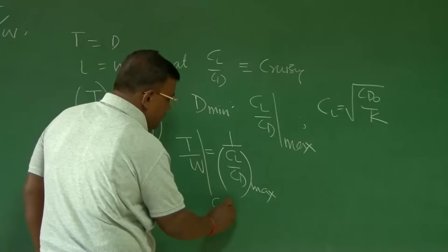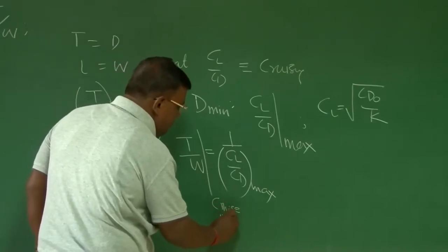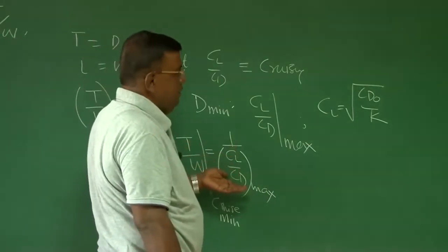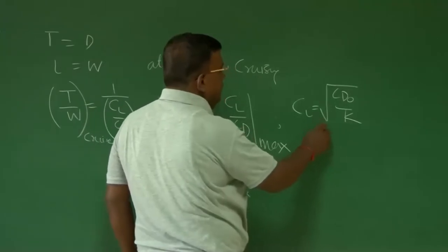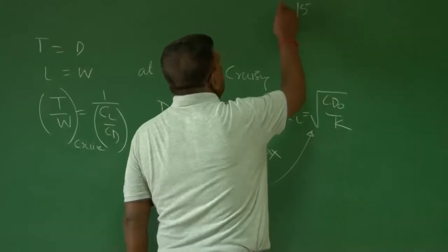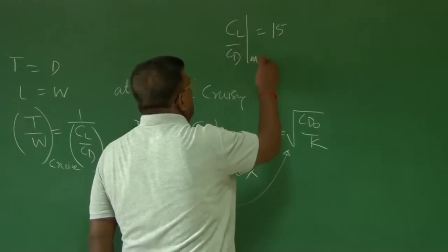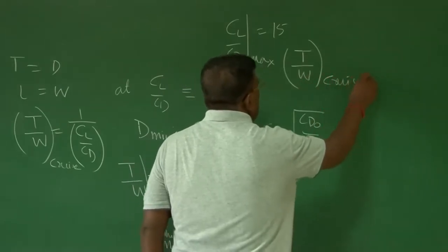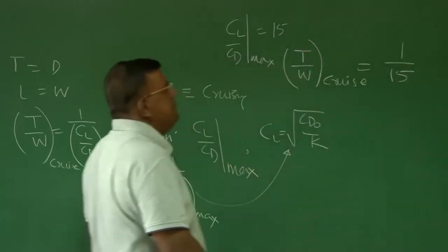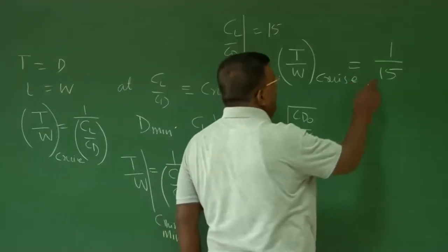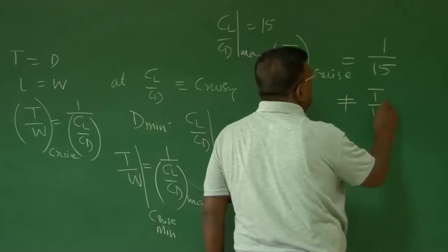When I write T/W cruise for minimum T/W, that means CL/CD is maximum, which means drag is minimum. So I know T/W equals 1/(CL/CD)_max, which corresponds to CL equal to sqrt(CD0/K). Typically CL/CD max could be 15, so you can see immediately T/W cruise is 1/15. But you should understand this T/W cruise of 1/15 is not equal to T/W at takeoff.